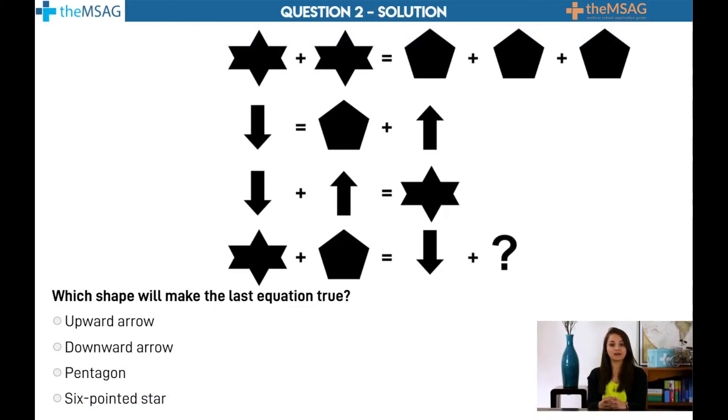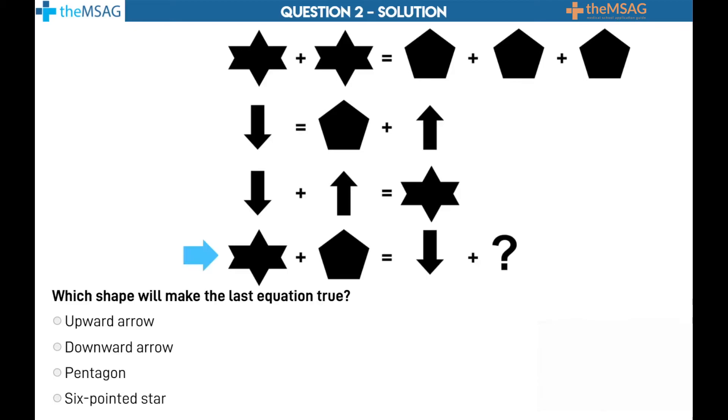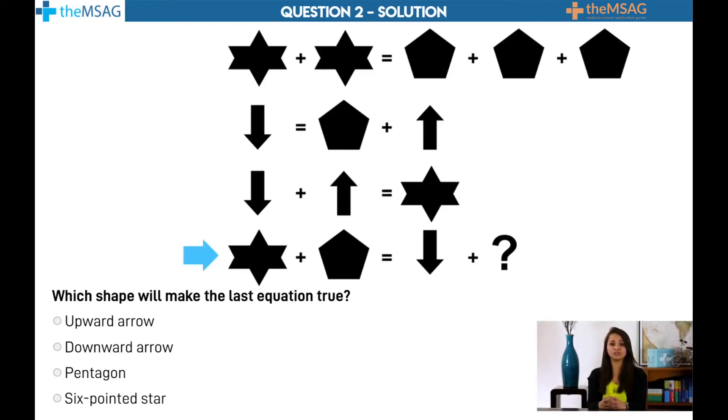The answer is downward arrow. Let's start, as always, with the final equation. It contains a star, which can be directly substituted using the equation above it, the third equation. Notice we don't have a particular plan.